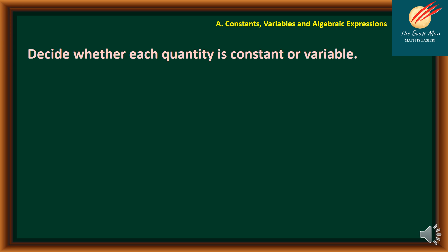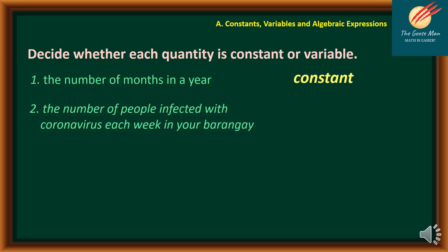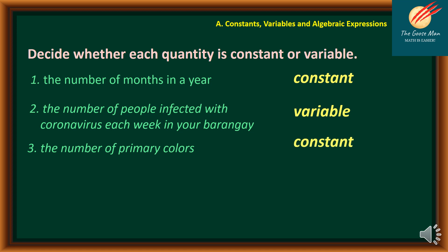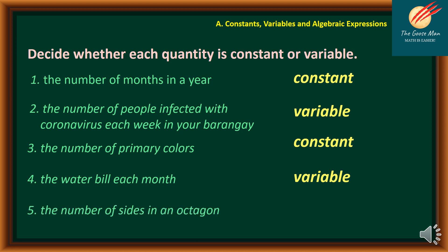Let's have an illustrative example: decide whether each quantity is constant or variable. The number of months in a year is constant because we have a fixed number of months. The number of people infected with coronavirus each week in your barangay is variable because the value changes from time to time. The number of primary colors is constant because we have only 3 primary colors. The water bill each month is a variable because it changes monthly. And the number of sides in an octagon is a constant.